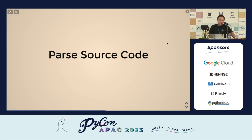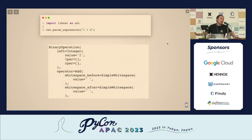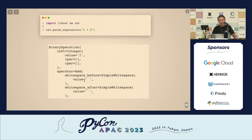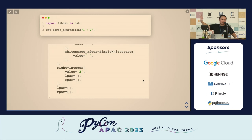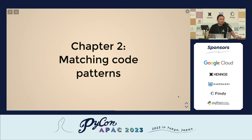Now we have our tool ready and we can parse our source code. This is an example of using libcst to parse a very simple expression. I have one plus two — it's a binary operation. Using libcst, you can see all the details have been preserved: on the left-hand side there's an integer, it's one; the operator is an add operator; there are also whitespace tokens before and after the operator; and on the right is an integer that is two.